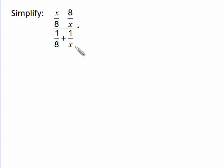Simplify the following complex fraction. So I have x over 8 minus 8 over x, and then I have 1 over 8 plus 1 over x.